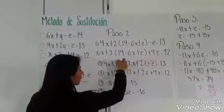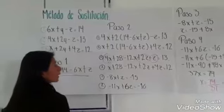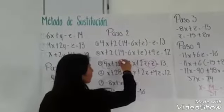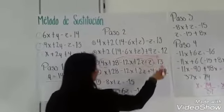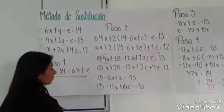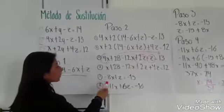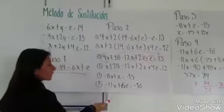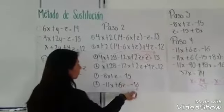Y este, como es un número independiente, se va a pasar al extremo del signo igual. Por lo tanto, en el primero nos salen menos 8X más Z es igual a menos 15.